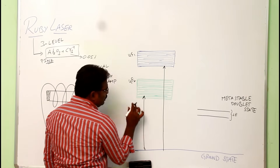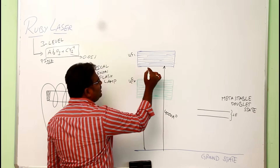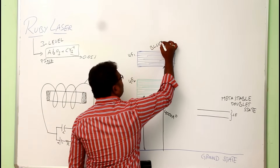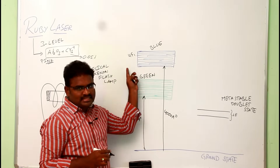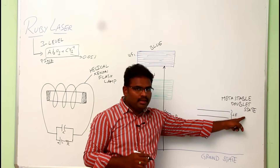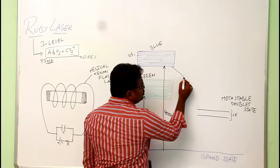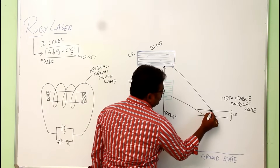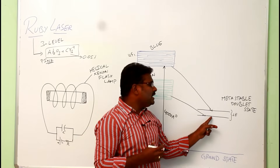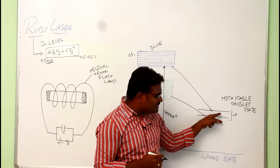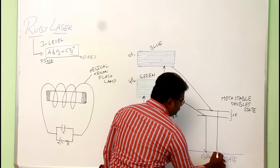By absorbing a wavelength of 5500 angstroms, the atoms go to the 4F2 level; by absorbing 4000 angstroms they go to the 4F1 level — this is the blue absorption and green absorption respectively. Since these energy levels are not metastable, the atoms fall down to the metastable doublet states. The atoms spend more time there, so population inversion is achieved between the metastable doublet state and the ground state.